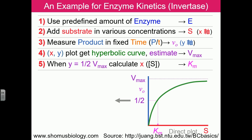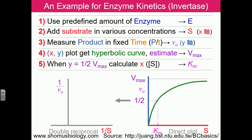If we do a double reciprocal plot — plotting 1/S on the x-axis and 1/v₀ on the y-axis — we get a line intersecting both axes at two different points. The y-axis intercept gives 1/Vmax and the x-axis intercept gives −1/Km. These two types of plots are used for determining catalytic parameters and also for analyzing different types of enzyme inhibitions.